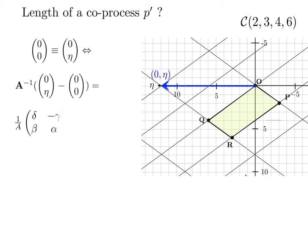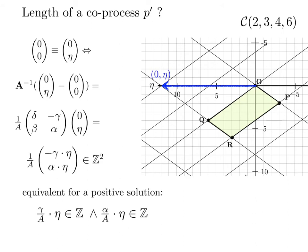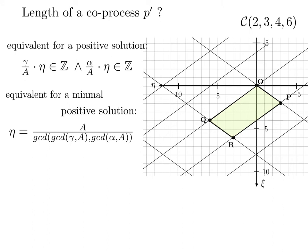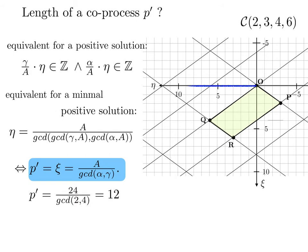For a positive solution, we get this computation using cycloid algebra and for a minimal solution we obtain which is simplified to p' equals A divided by the gcd of alpha and gamma. For the example, this is the number of 12 transitions.